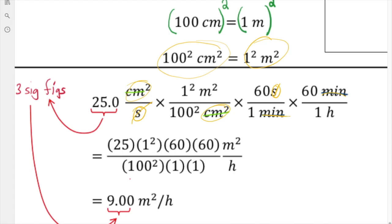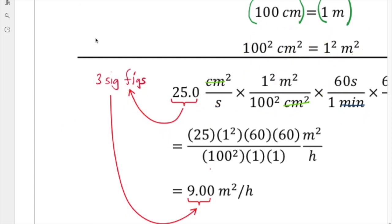That reduces down to 9.00 meters squared per hour, and it's fairly straightforward. But again, you have to remember, since this started off with three sig figs, the final answer has to have three sig figs. Now we don't look at these things, see this one over 100, don't get confused that this actually is not a measured quantity. This is an exact number. One meter equals exactly 100 centimeters.